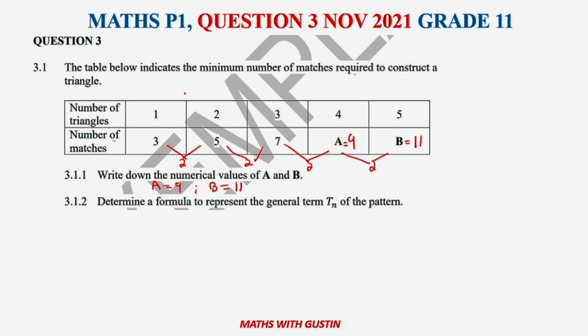Moving right along with 3.1.2, it says determine the formula to represent the general term Tn of this pattern. We know that this is an arithmetic pattern or sequence with a common difference.